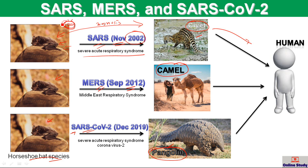Through mutation, the virus can produce some proteins that best fit the intermediate animal, like the civet, the camel, or the pangolin. And then from those animals, the virus again mutates its genetic material to produce a protein that best fits its next host, like humans. That is how the virus mutates each time and gains the ability to infect the next host.